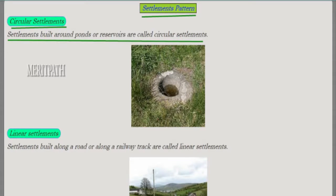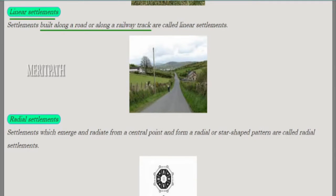Next, let's see the patterns of settlements. The first one is circular settlement, which means those houses built around ponds or reservoirs are known as circular settlements. This image shows a circular settlement.